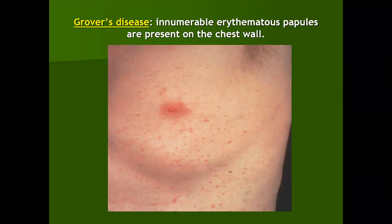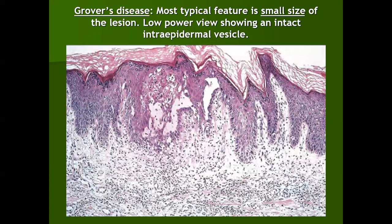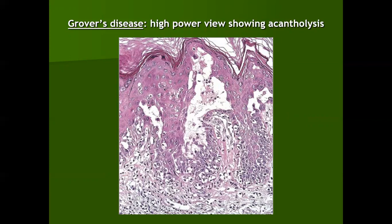Grover's disease is mainly seen in white races on the chest and trunk, and there is a relation to sun exposure. Histologically, Grover's disease is like a mini pemphigus vulgaris, in which we see a focal vesicle or split, intraepidermal acantholytic cells, and suprabasal blisters, but all limited to a focal area within the biopsy section, because clinically the lesions are also in the form of small papules and vesicles.